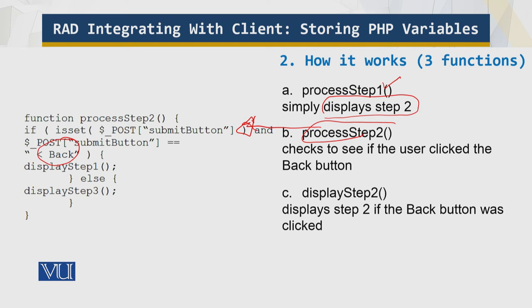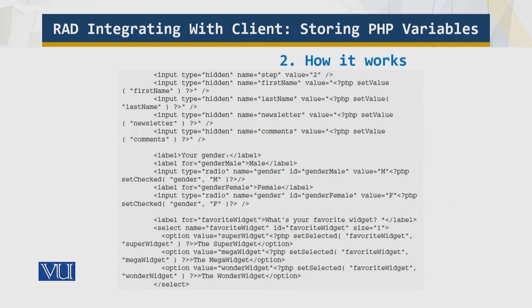If it's not the back button case, it goes to display step three. We have a whole set of hidden fields. The remaining four functions — display step one, display step two, display step three, and display thanks — display forms for each of the three steps, as well as the final thank you page. They include and populate all the fields, whether visible or hidden, ensuring that the entire signup data is sent back to the server each time a form is submitted, thereby carrying the data across all three steps.